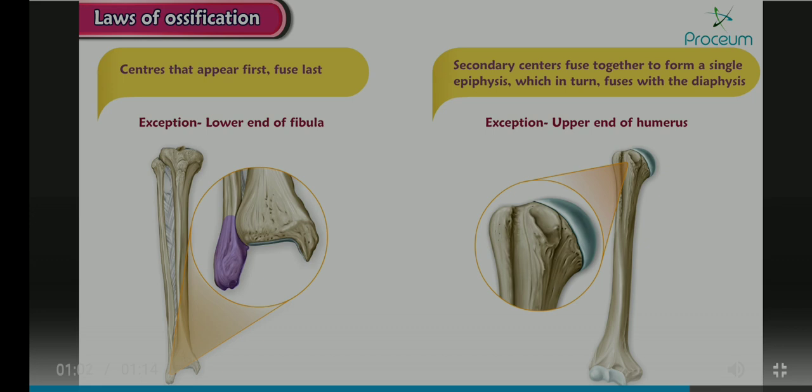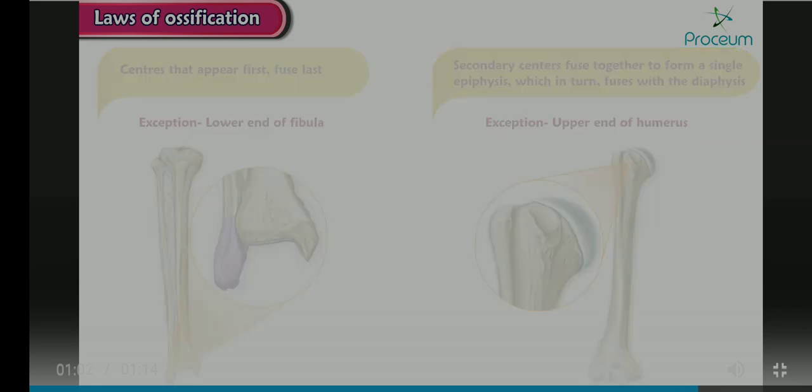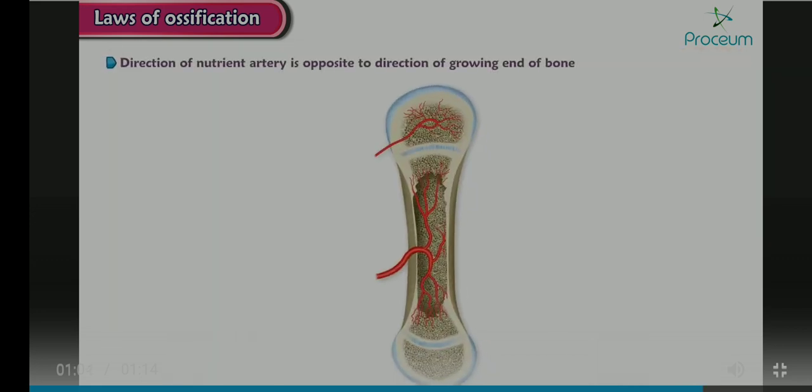The direction of the nutrient artery is opposite to the direction of the growing end of the bone.